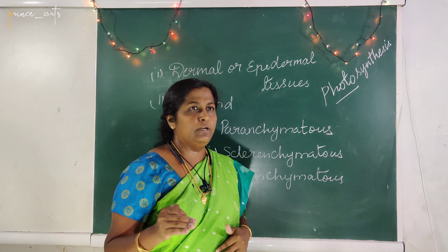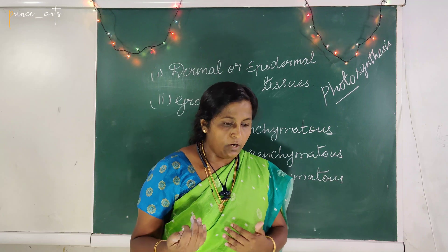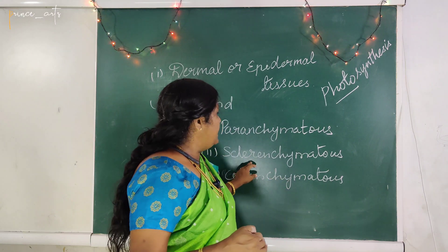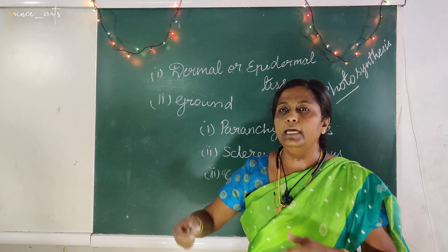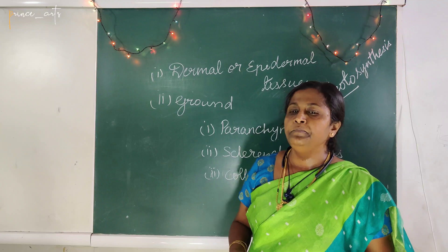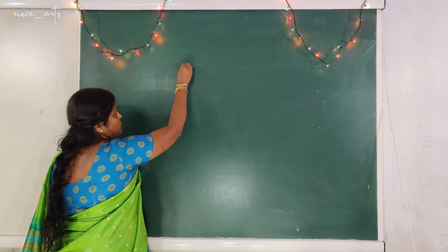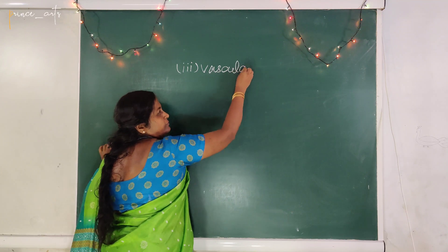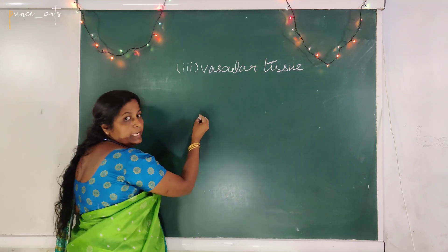Ground tissue also helps in storage of food material such as starch in the cells. It also gives support to the plant and helps in protection.